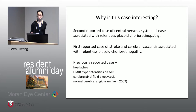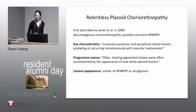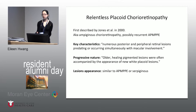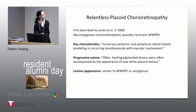There is one case reported previously in 2009 of relentless placoid associated with CNS disease, but that patient just had headaches, no focal neurological symptoms, and had FLAIR hyperintensities on MRI but no definite evidence of stroke, and their cerebral angiogram was normal. Relentless placoid chorio-retinopathy was described in the year 2000 by Jones et al. It has likely been around longer — certain things described as recurrent AMPI probably fell in this category. It has also been called ampigenous chorio-retinopathy since it shares characteristics with AMPI and serpiginous.